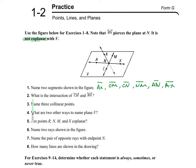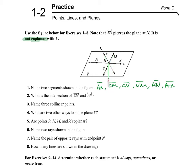The next one says, what is the intersection of line CM and line RN? RN is this line that goes right here — the one that pierces plane V. CM is this line that goes right here. The intersection is that point that is shared by both lines. In this case, it's just point N.